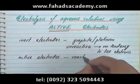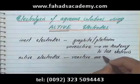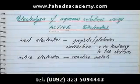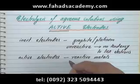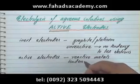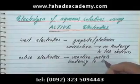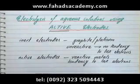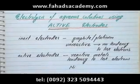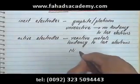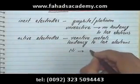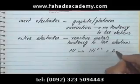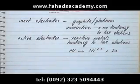Active electrodes, on the other hand, are made from reactive metals which are higher up in the reactivity series. These active metals have a tendency to lose electrons. For example, if you have an electrode made from nickel and the battery is trying to pull electrons away from it, nickel would end up losing two electrons to the battery.